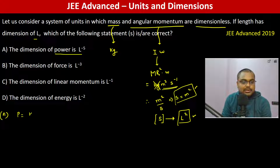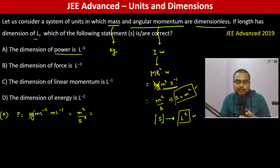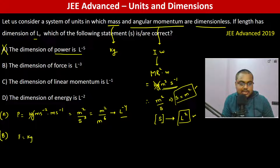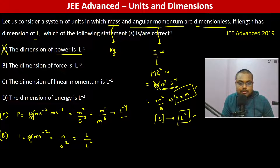Now the dimension of power: working it out, we get meter²/second³. Second is L², so second³ is L⁶. Therefore this goes as meter²/L⁶, which is L⁻⁴. Then checking further: meter per second² gives meter divided by L⁴, so the power dimension goes as L⁻³.